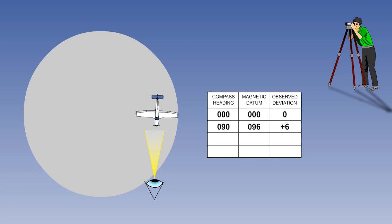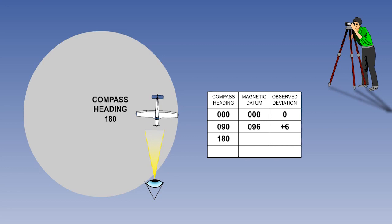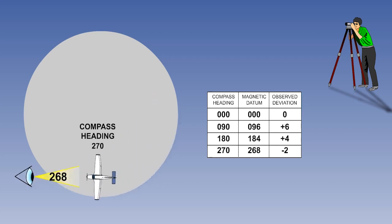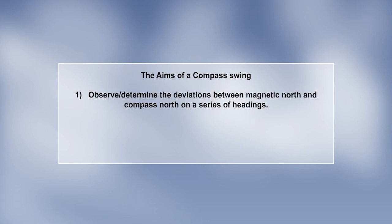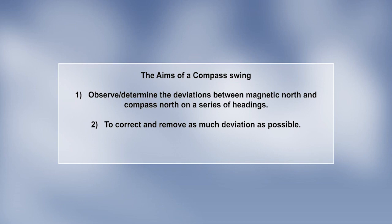The process is then repeated through 180 degrees. The aims of the compass swing are: firstly, to observe and determine the deviations between magnetic north and compass north on a series of headings; secondly, to correct and remove as much deviation as possible; and thirdly, to record the residual deviation, which is left after a compass has been adjusted.